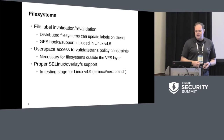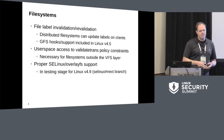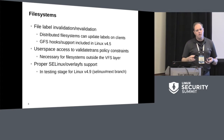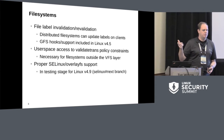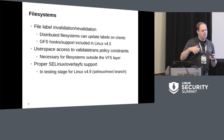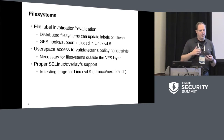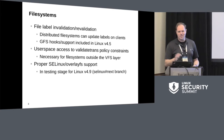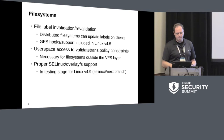We've also added user space access to validate trans policy constraints via SELinuxFS. This is important for file systems built up in user space — all your FUSE file systems, as well as any out-of-tree file systems that don't use all of the VFS hooks. It's kind of esoteric. If you don't understand what this is, don't worry about it. But if you do, we've got it. I already mentioned the overlay FS support that's in the SELinux Next branch now — cross your fingers it goes to 4.9.